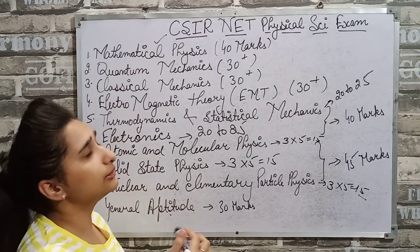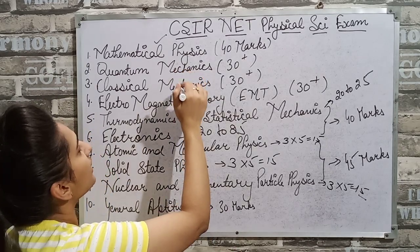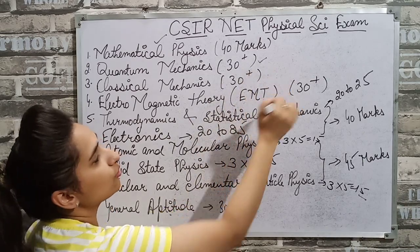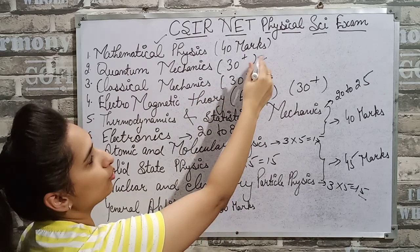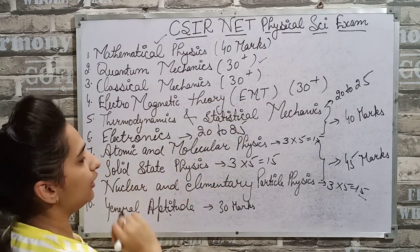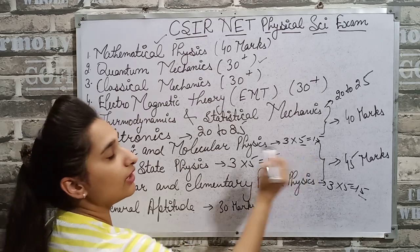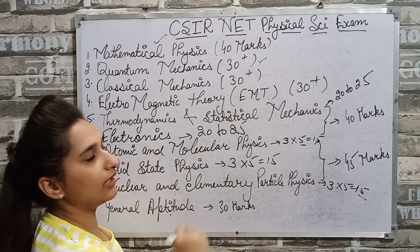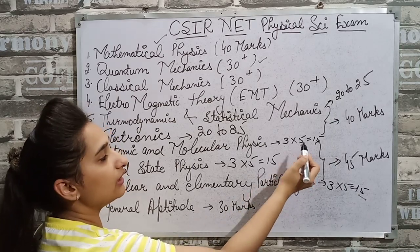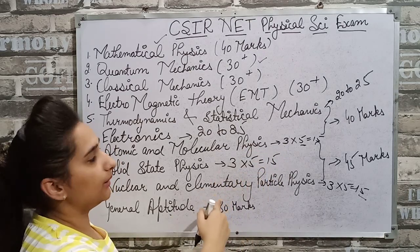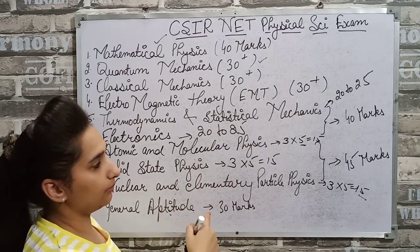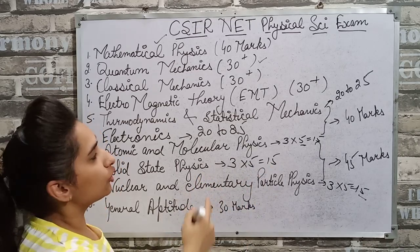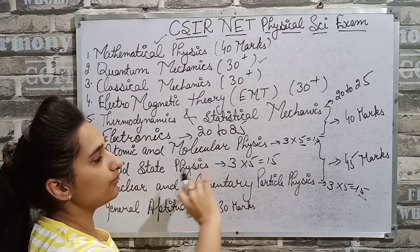But if someone doesn't trust in Mathematical Physics, then Quantum Mechanics, Classical Mechanics, and Electromagnetic Theory will be compulsory, because they carry a lot of marks. For Atomic, Solid State, and Nuclear, the question will be of 55 marks, and there is a 2.5 negative marking. Due to the 2.5 negative marking, do not attempt wrong questions in these three subjects. If we attempt a wrong question, then 2.5 marks are deducted. So I prefer that if you are not sure, don't attempt it.